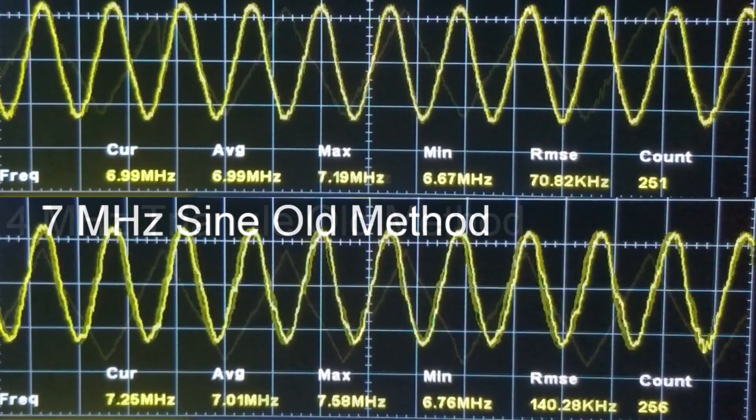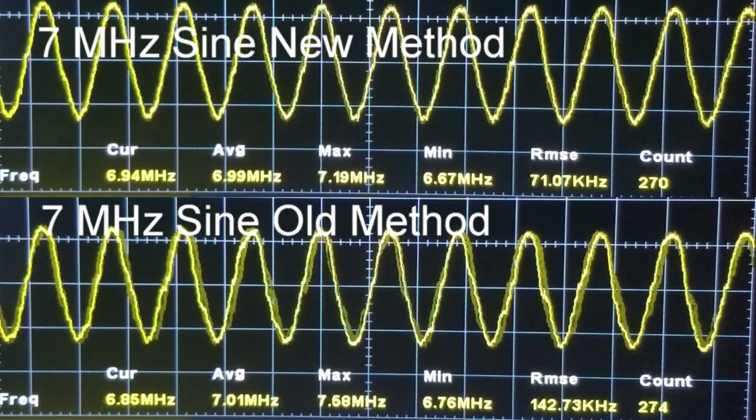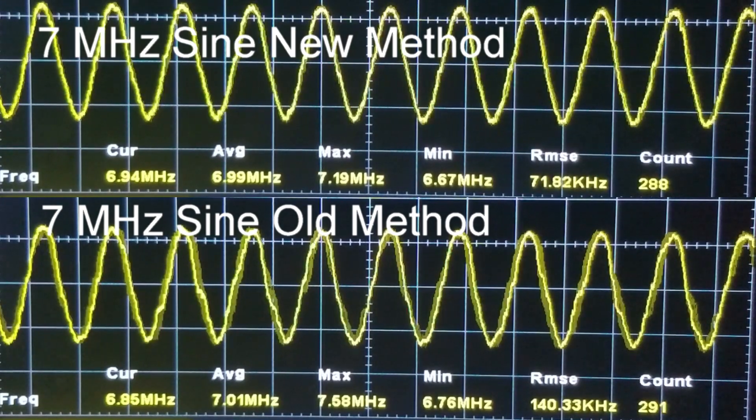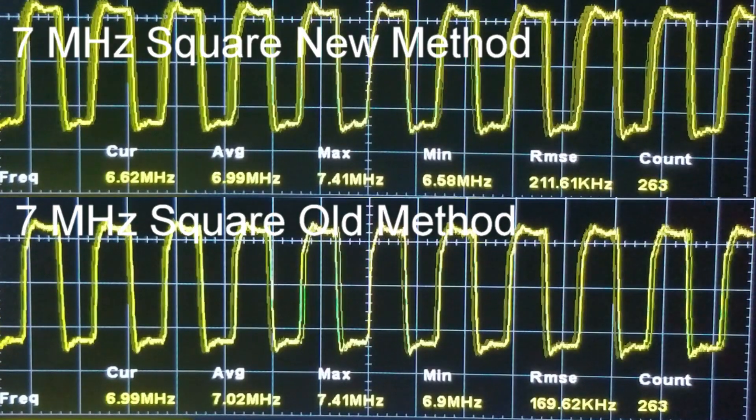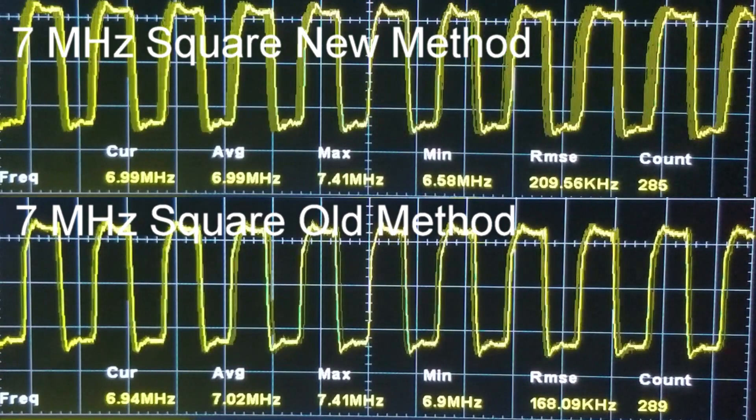Let's look at a comparison of 7 megahertz between the old and new methods for sine, square, and triangle waves. The sine wave is more stable with the new method, whereas the square and triangle waves are not as good with the new method.